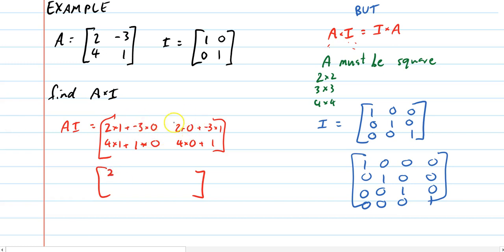2 times 0 is 0, so I get no answer there. Negative 3 times 1 is negative 3. 4 times 1 is 4, plus 1 times 0, so my answer is 4. And 4 times 0 plus 1 is 1.